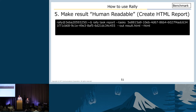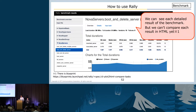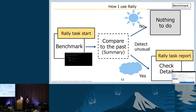After you finish the benchmark, you can generate an HTML report. This report provides a lot of information and we can see detailed results. But we can't compare multiple results in HTML — I hope Rally implements that in the near future. After we finish some benchmark scenarios, we always check the summary and compare it to past results. If we detect an unusual result, we check the details using the Rally task report and analyze the cause.